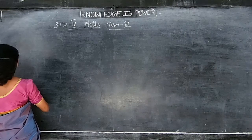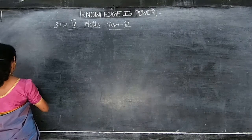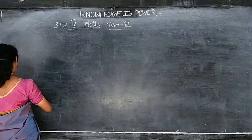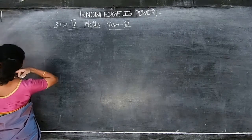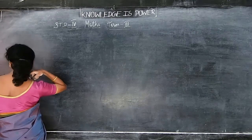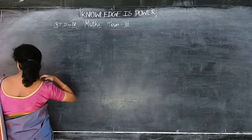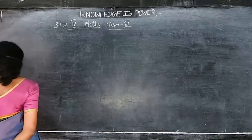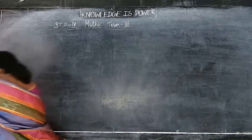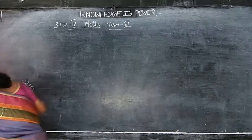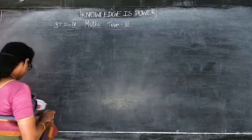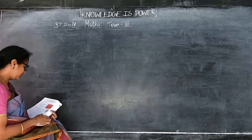A teacher went to a science exhibition with students. The entry fee is rupees 250 and the teacher bought some materials for rupees 320. She had a balance amount of rupees 330. Find the total amount she had. You can do it by yourself.